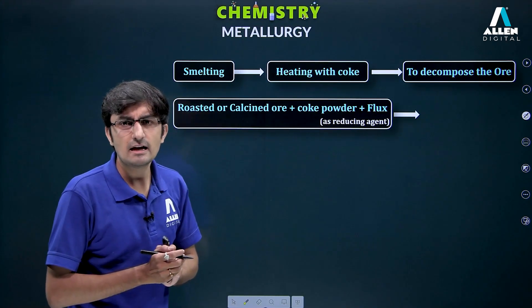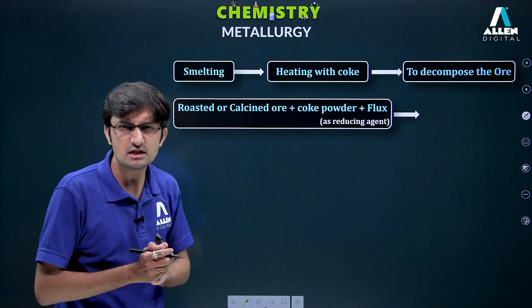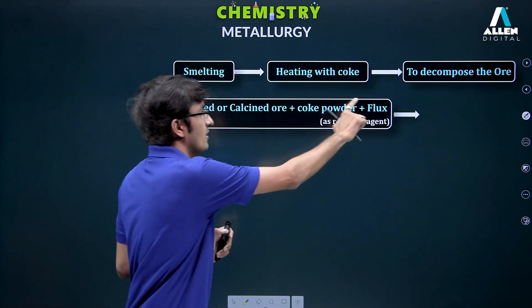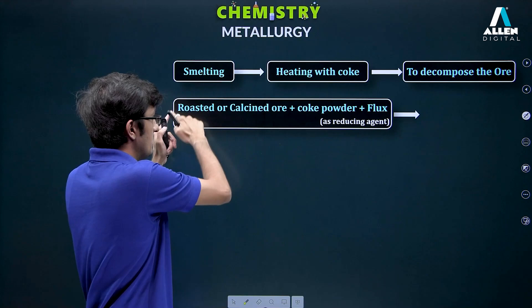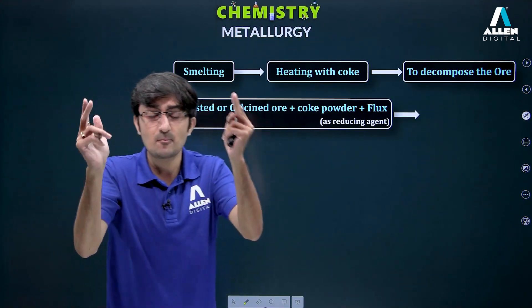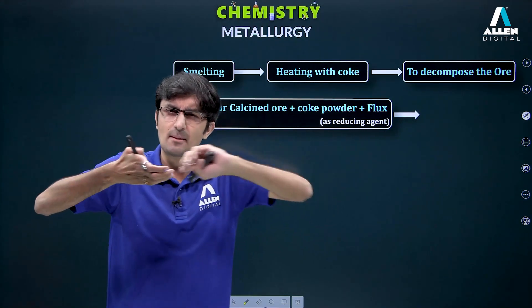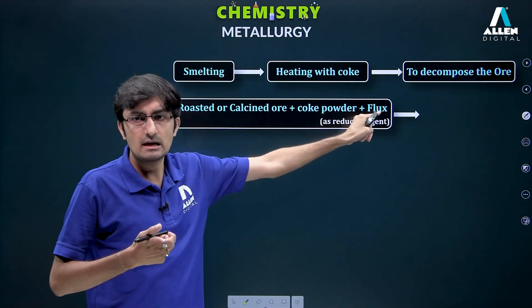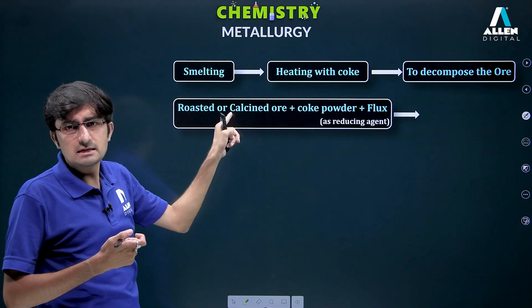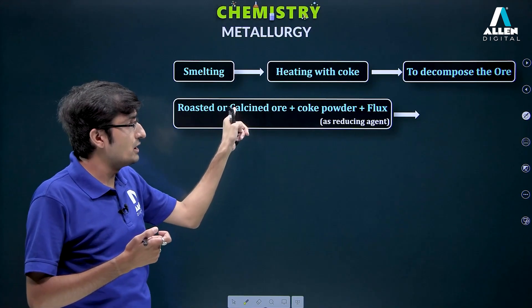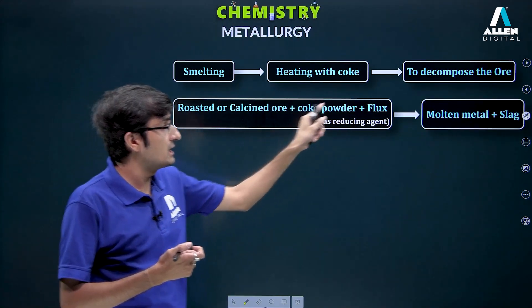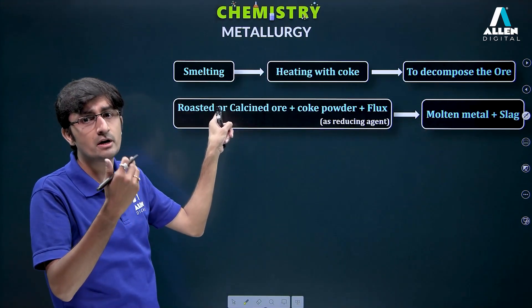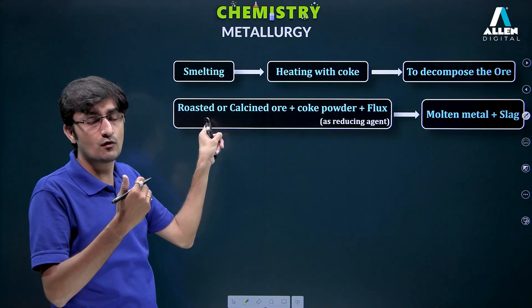Along with coke, we also add flux. Flux is not a new concept. In the roasted or calcined ore, there are impurities that are not separating out and not melting. So we add flux separately — flux reacts with those impurities, separates them, and forms slag. Basically, slag is formed from flux plus the original impurities already present within the ore that were not melting.